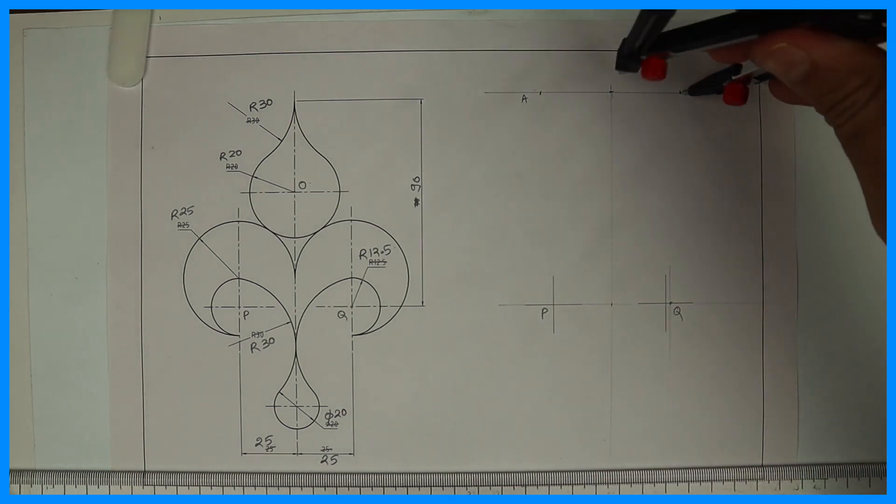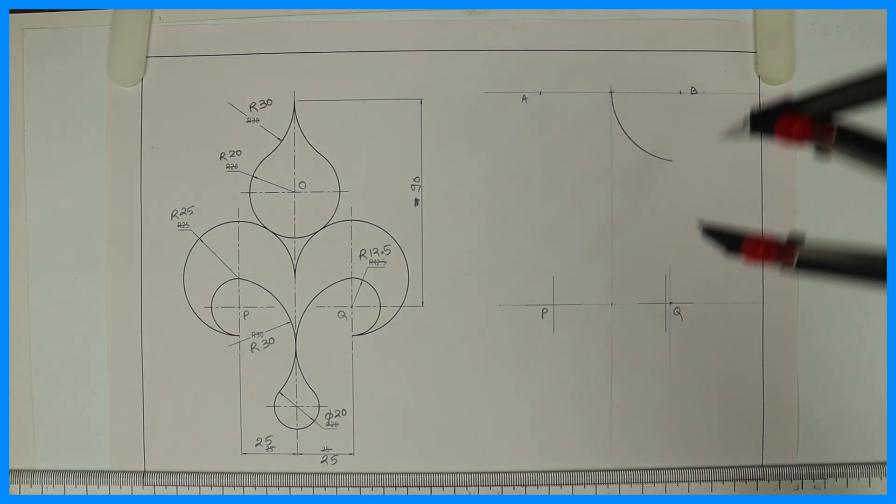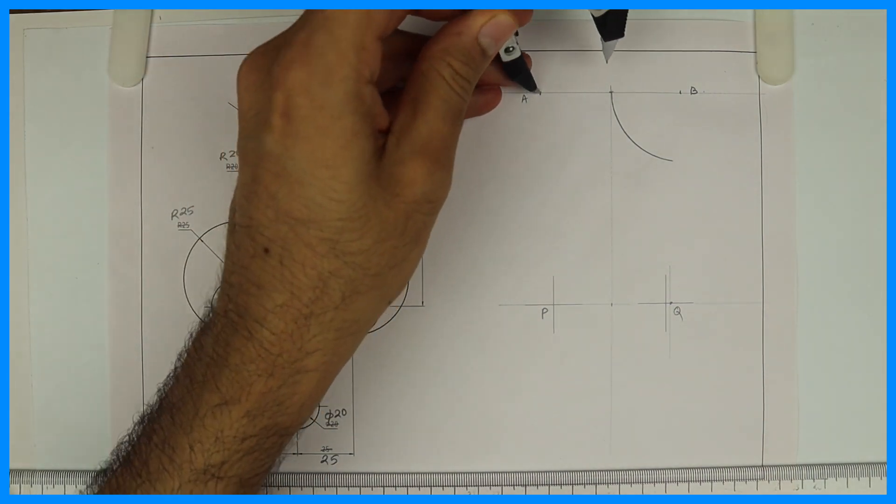Now from B take radius 30 and draw a curve like this, and from A draw radius 30.